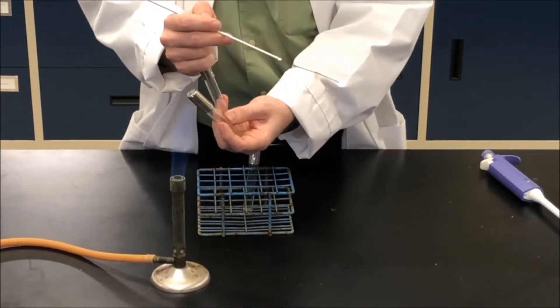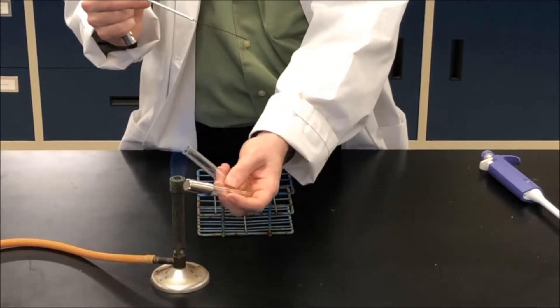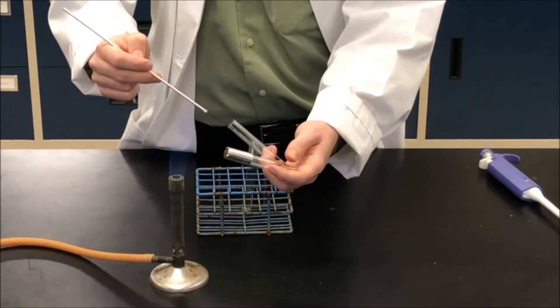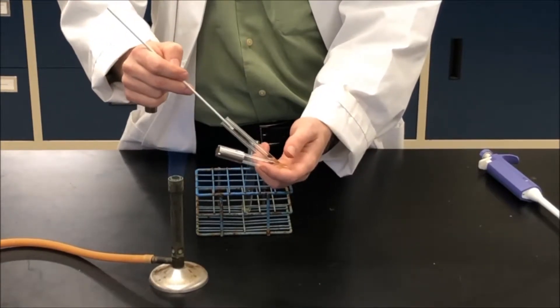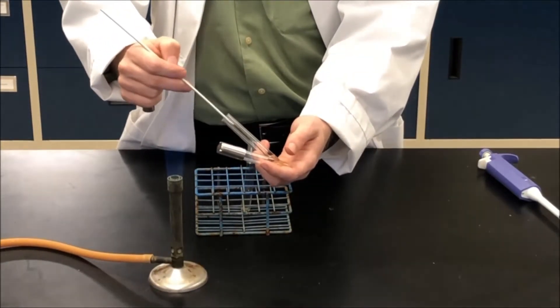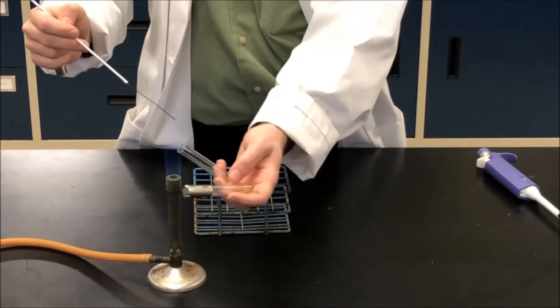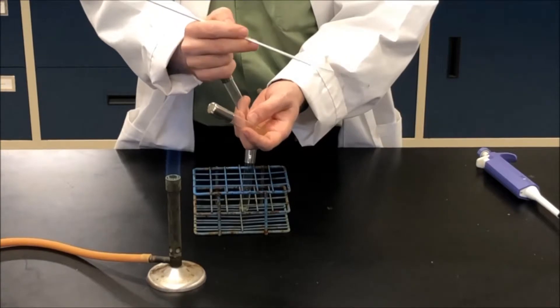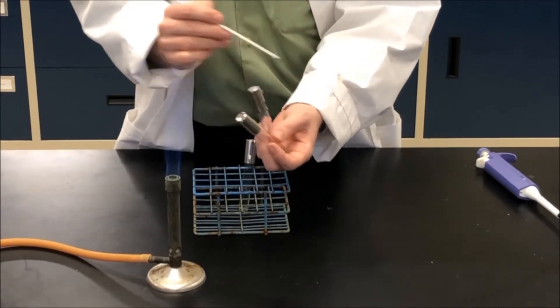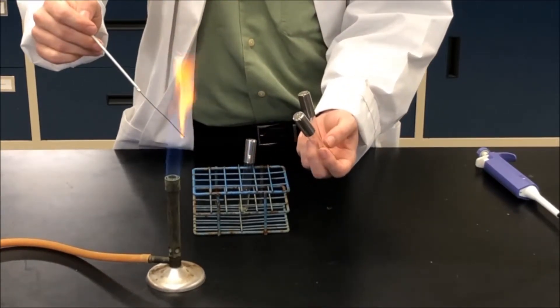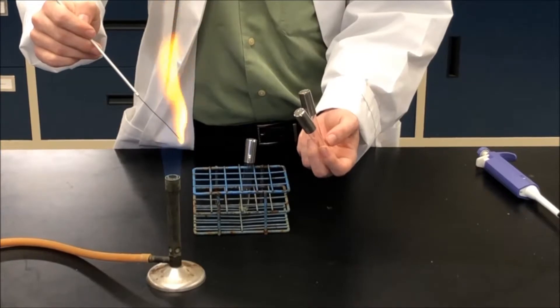After you have some liquid in your loop, you then flame the lip of your culture, close the tube, open up the new tube, flame, and then insert into the new broth. Gently mix, flame, close the lip of the test tube, and then flame your inoculating loop.